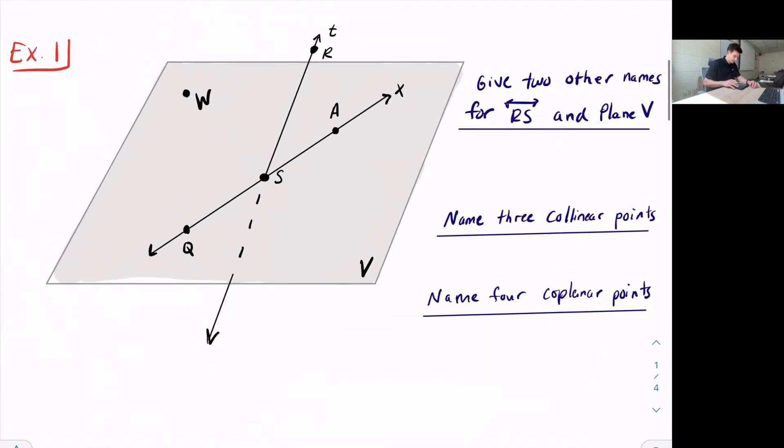So let's look at an example. Here we have Plane V, right? See how it's labeled right there? V is not a point, so it's Plane V. And we have Line T that is intersecting this plane. That's why when we see these dashed lines right here, that means that line is going through the plane.